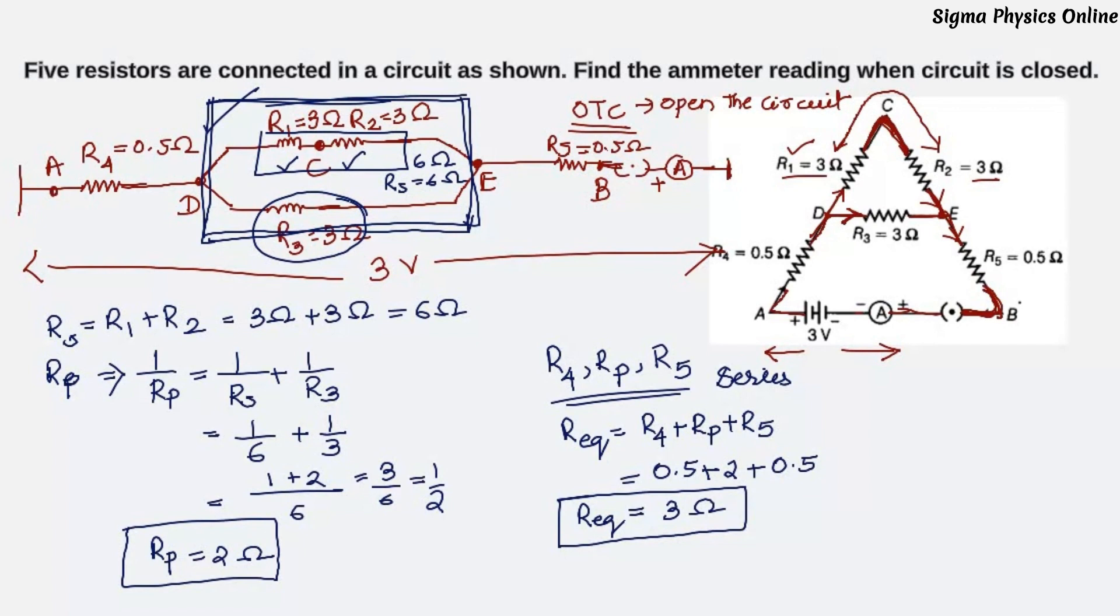Now that we have the equivalent resistance, the question asked is to find out the ammeter reading. Let's find out the ammeter reading using Ohm's law. We have the potential difference given as 3 volt and we found out the equivalent resistance of the circuit is 3 ohm. From Ohm's law V is equal to IR. I will be V by R that is 3 by 3 that is 1. Current is 1 ampere.